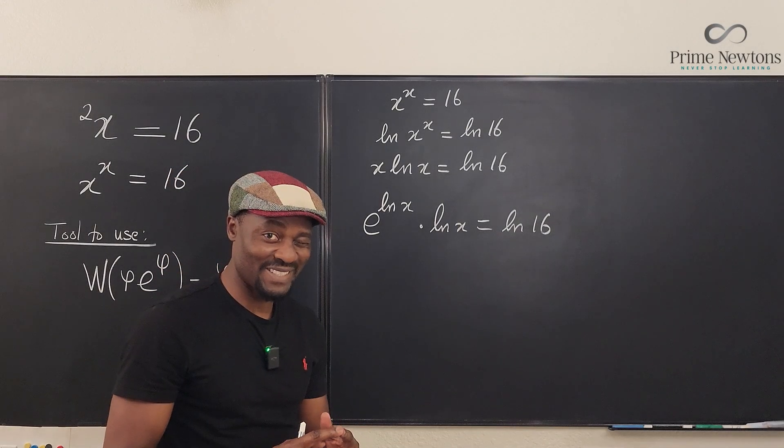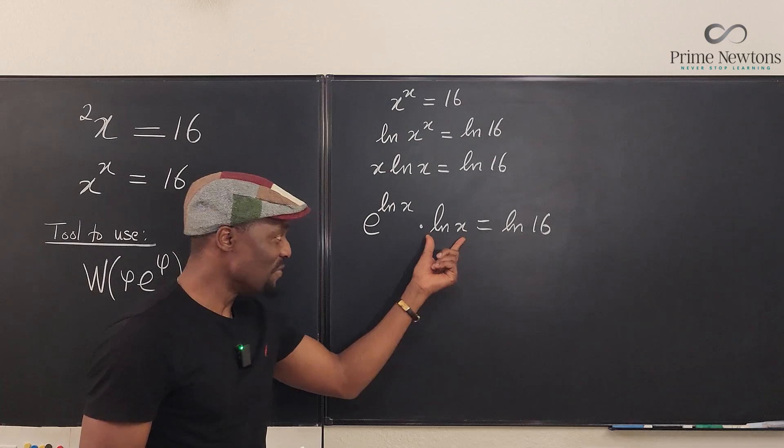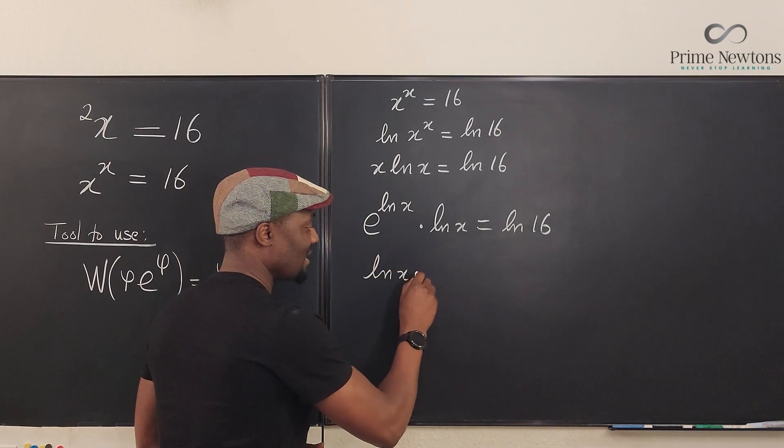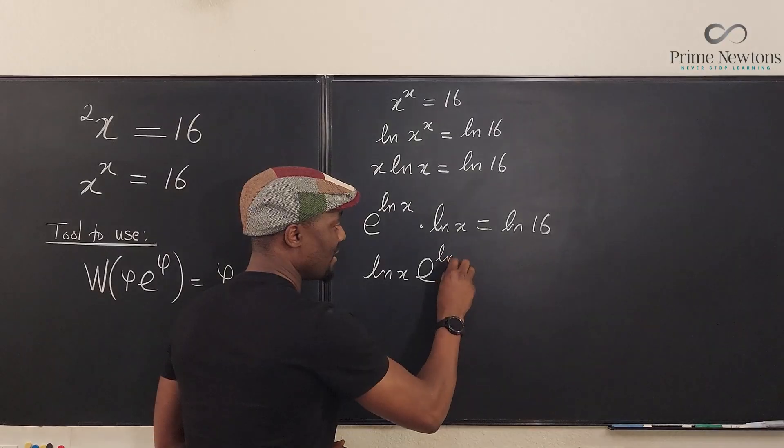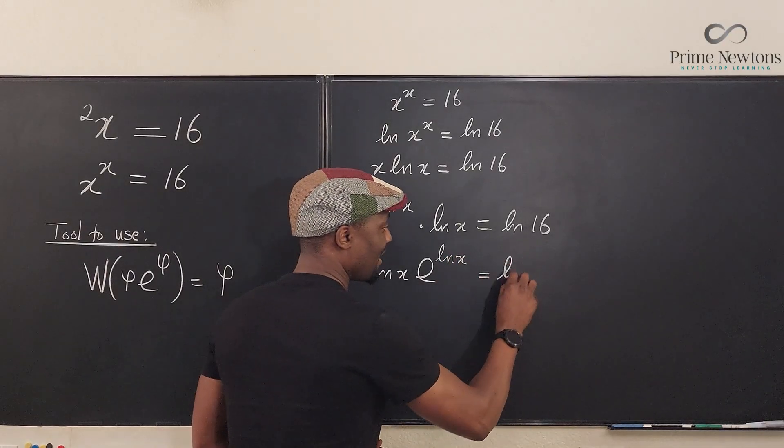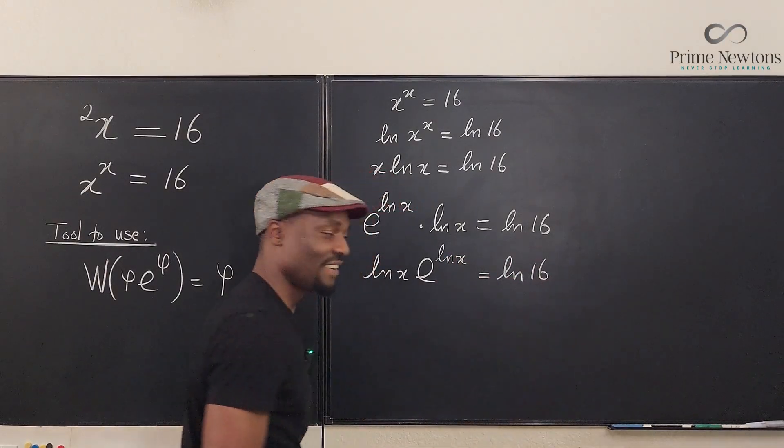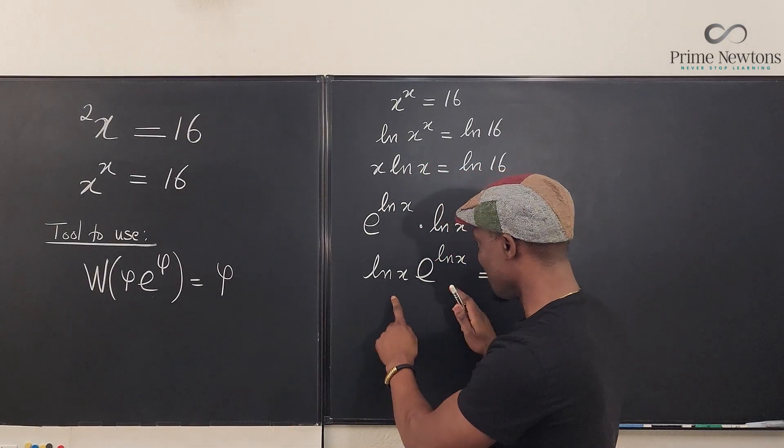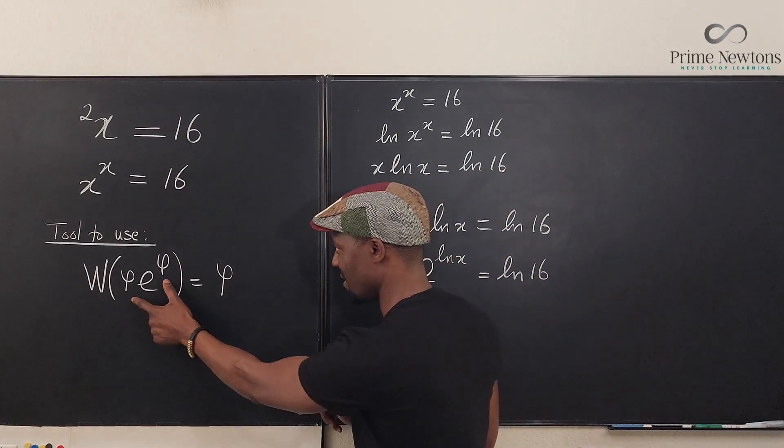Something is about to happen. Watch this. I'm going to move it to the side so that this becomes ln of x times e to the ln of x. Do you think I have created what I was looking for? This now looks like this.